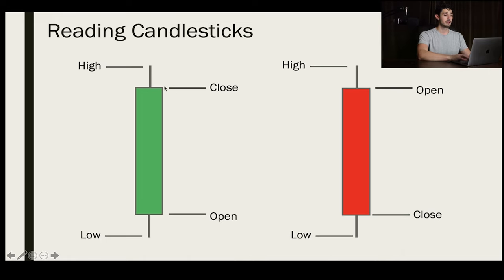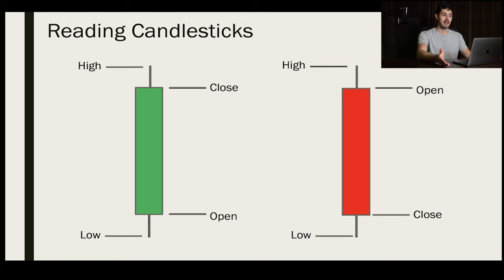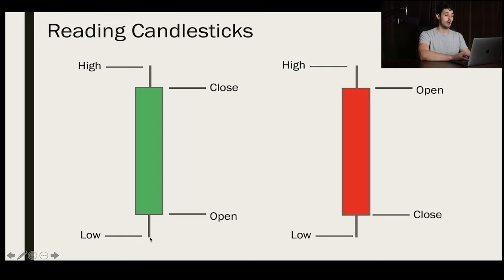Moving on, we also have wicks or tails. Whenever you see a tail on a candlestick — either at the top or the bottom — these tails represent the highs and lows of price action during that time frame. So if this is the daily chart, the high of the wick is going to represent the daily highs, and the low of the wick is going to represent the daily lows.